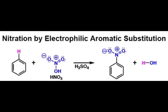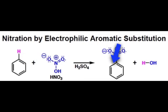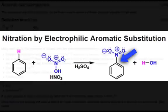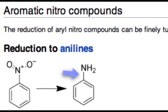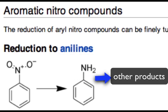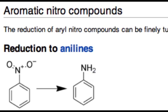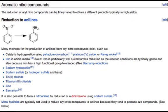Nitration of an aromatic ring is a particularly important reaction because the nitro-substituted product can be reduced to arylamines. The arylamine can then be derivatized into a variety of compounds, and this nitration-reduction route is widely used in industry. However, we'll take a look at the reduction of a nitro group in the next lesson.